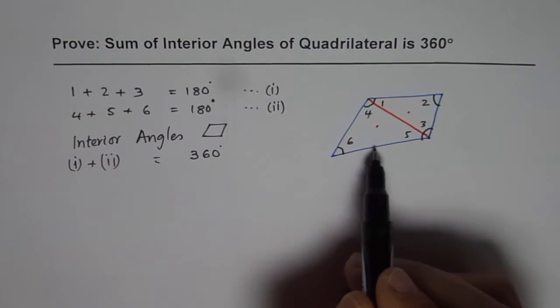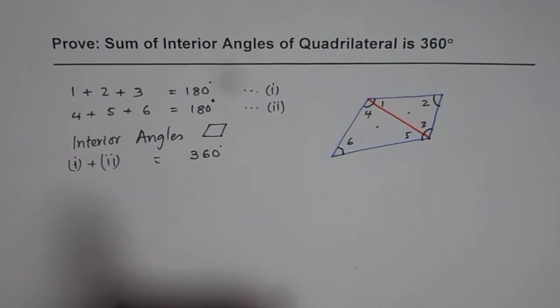All these angles, when you add them up, you get 360 degrees. So that is how you can prove that sum of interior angles of a quadrilateral is always 360 degrees.